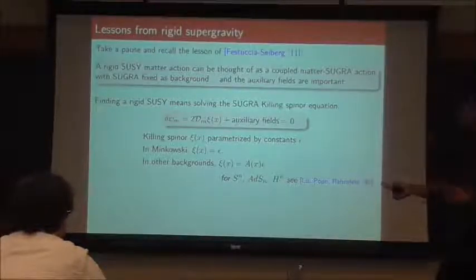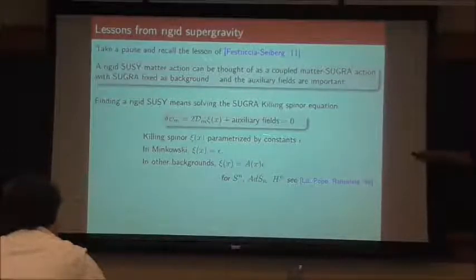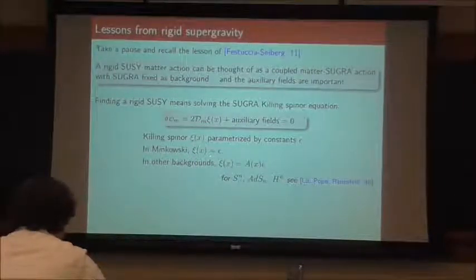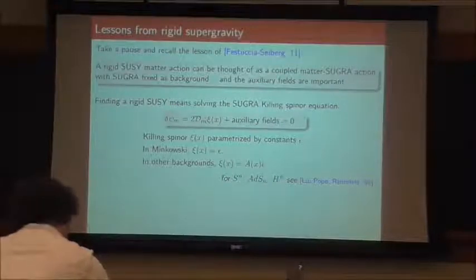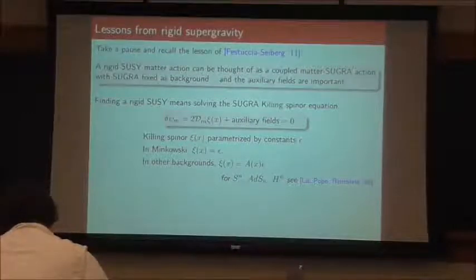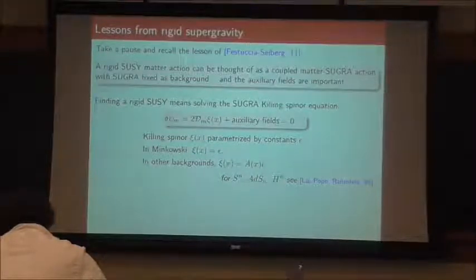For 4D N=2, I'm saying I want 8 supercharges — I want to have 8 linearly independent constants epsilon that I can construct ζ(x) out of. In Minkowski, of course, these are the same thing. The auxiliary fields are all zero. I just have the derivative of ζ vanishing, and I have 8 of them when you count all the spinor and SU(2) indices. In other backgrounds, you might expect something like ζ(x) to be some dressing factor times epsilon.